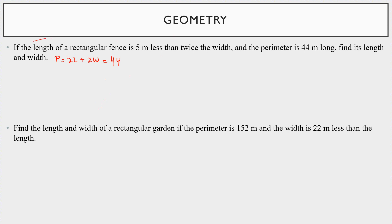The length is stated in terms of the width. The length is five meters less than twice the width, so length equals 2w minus 5. We can't solve 2L + 2W = 44 directly because there are two variables. But we can replace L with 2w minus 5: so 2 times (2w minus 5) plus 2w equals 44.